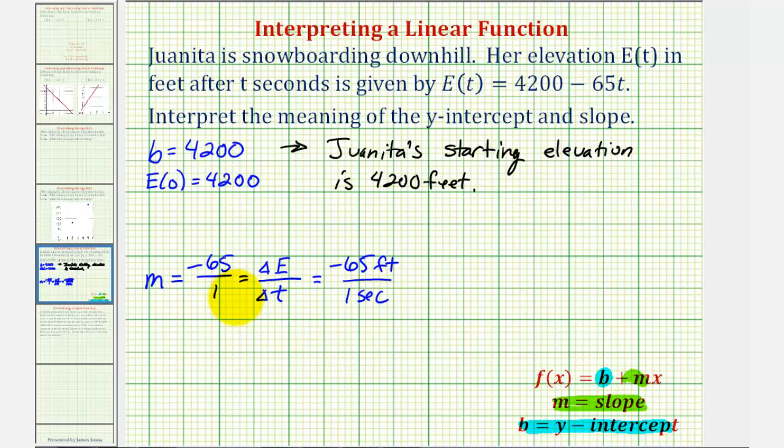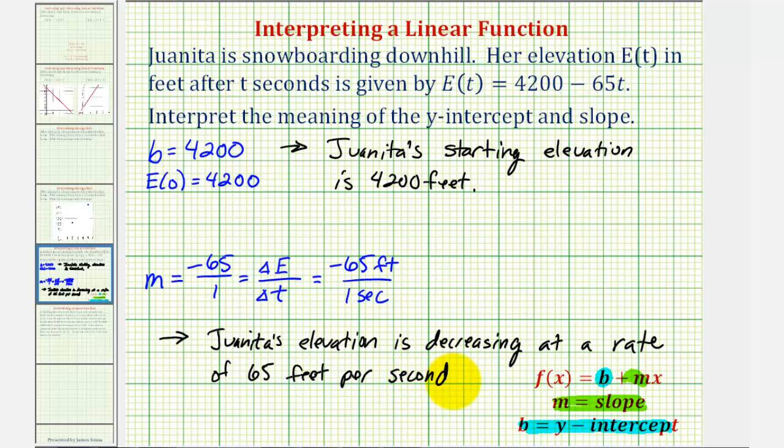So the slope tells us Juanita's change in elevation, which is decreasing at 65 feet per second. Notice how I did not include the negative here on the 65, because this negative tells us that it is decreasing. I hope you found this helpful.